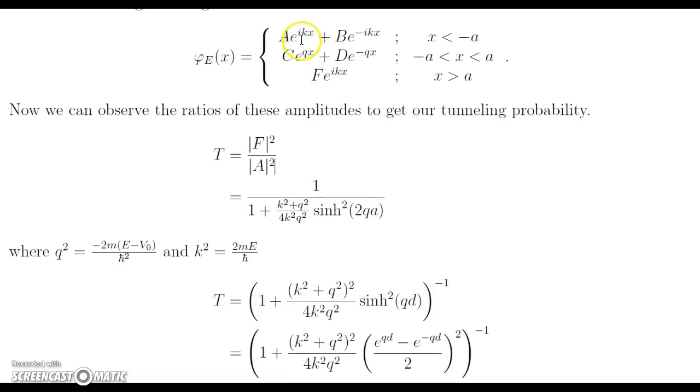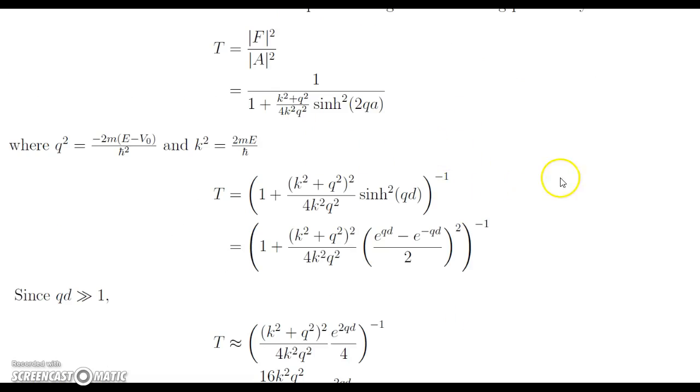Now that we have this, we can do some simplifications and also apply the qd being much greater than 1 to simplify and get this proportionality that we'd like. So we have our transmission or tunneling probability here. I just wrote it as an inverse so it's not so crunched in the LaTeX.